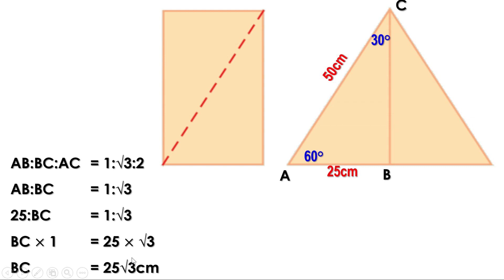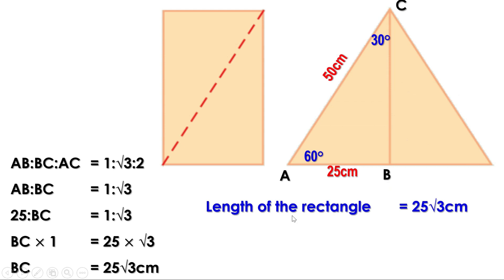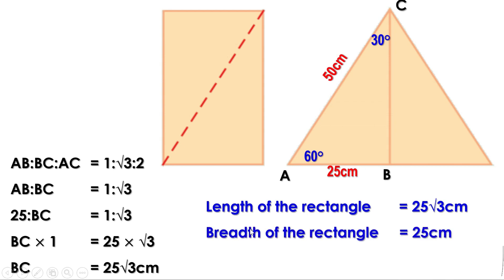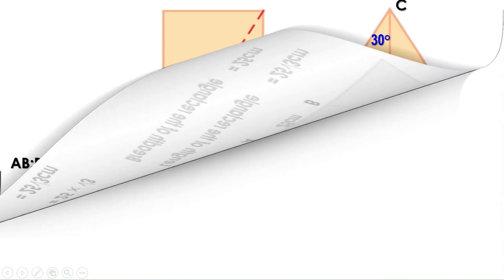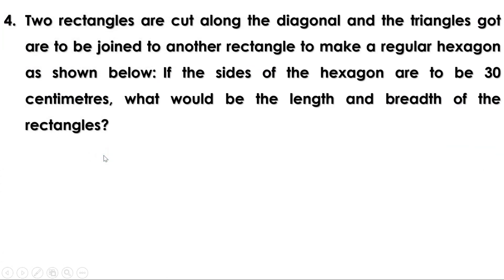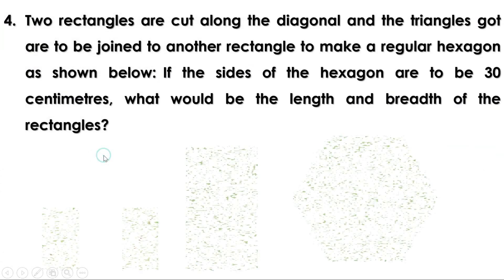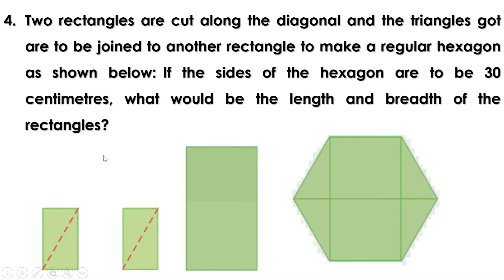BC equals the length of the rectangle, so the length of the rectangle is 25√3 centimeters. AB equals the breadth of the rectangle, so the breadth of the rectangle is 25 centimeters.